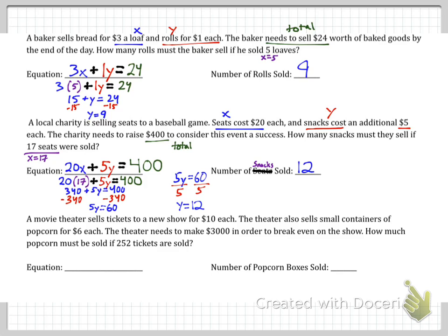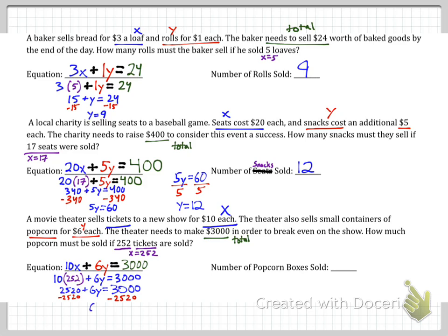A movie theater sells tickets to a new show for $10 each. The number of tickets is x. It's also selling small containers of popcorn for $6 each. We'll call the number of containers y. The total is 3,000. So we have 10x plus 6y equals 3,000. If 252 tickets are sold, well the number of tickets, that's x. So x equals 252. Plug that in for x. Then we solve for y. And we get the number of popcorn boxes sold is 80.